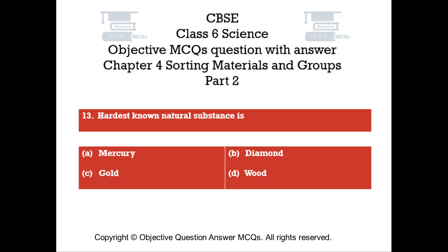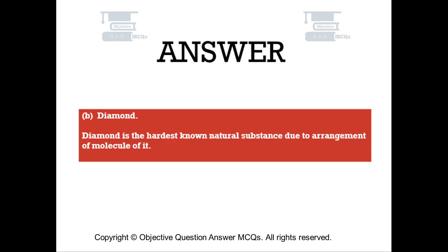Question number 13. The hardest known natural substance is — Option A: Mercury. Option B: Diamond. Option C: Gold. Option D: Wood. The right answer is Option B — Diamond. Diamond is the hardest known natural substance due to the arrangement of its molecules.